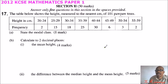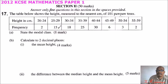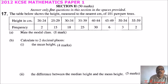...the height, measured to the nearest centimeter, of 101 purple trees. The heights and frequencies are: 20–24 frequency 2, 25–29 frequency 15, 30–34 frequency 18, 35–39 frequency 25, 40–44 frequency 30, 45–49 frequency 6, 50–54 frequency 3, 55–59 frequency 2.